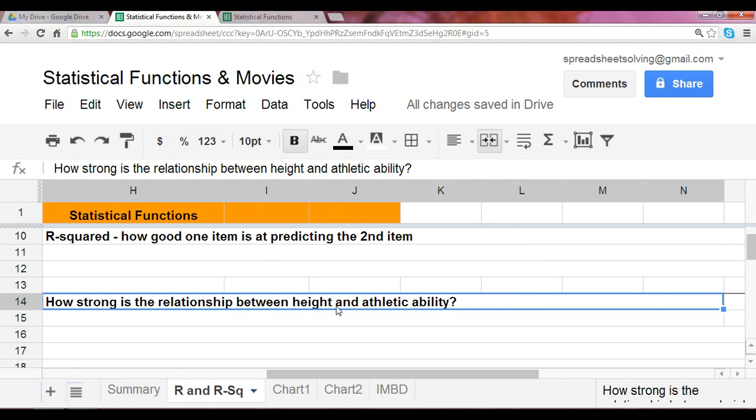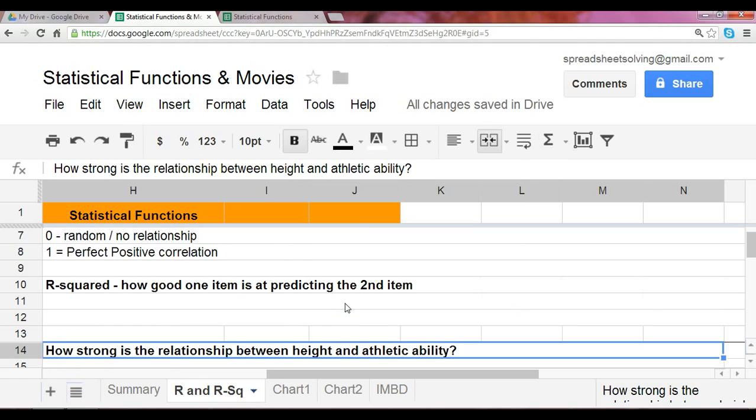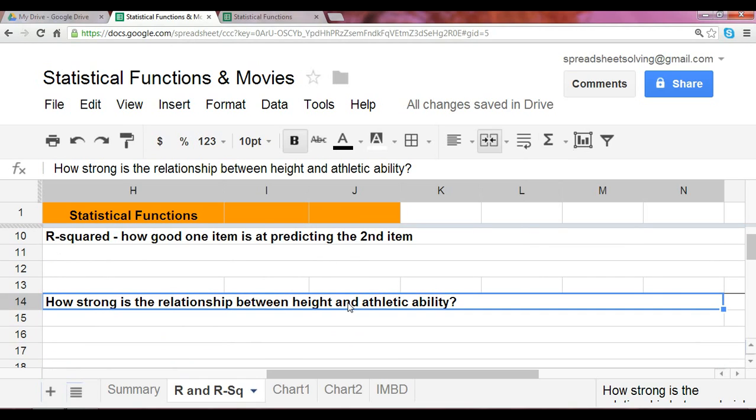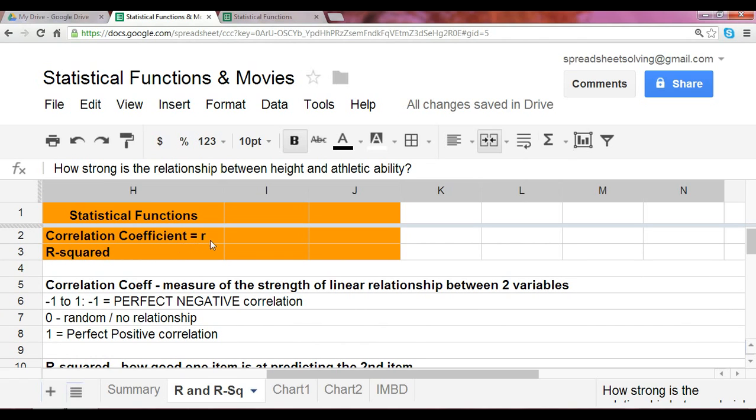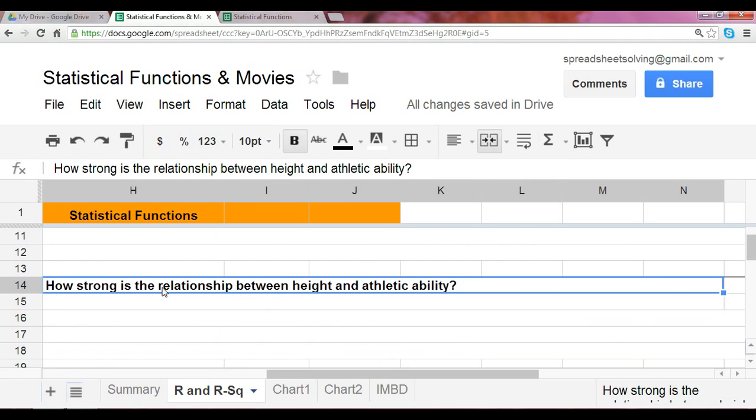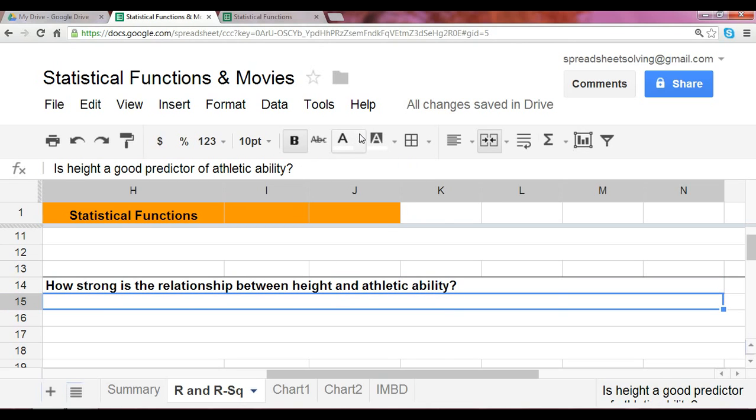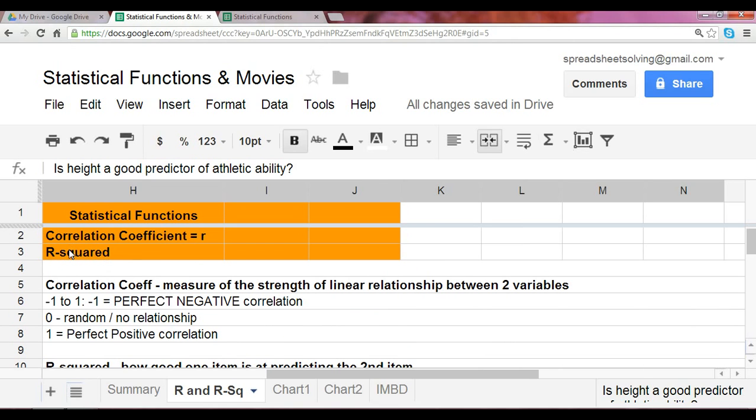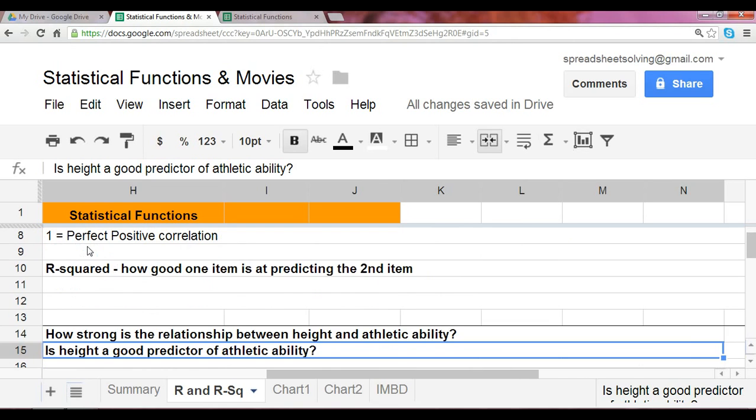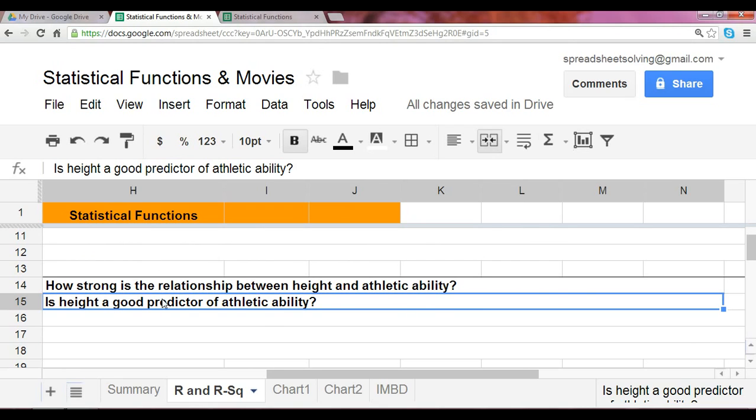How strong is the relationship between height and athletic ability? Intuitively, you would think typically the taller you are, you generally would have a pretty decent chance of being a good athlete. I would say there is a positive relationship. The correlation coefficient should register between 0 to 1. It should likely be a positive correlation between height and athletic ability. Is height a good predictor of athletic ability? That's where the r-squared comes into play.